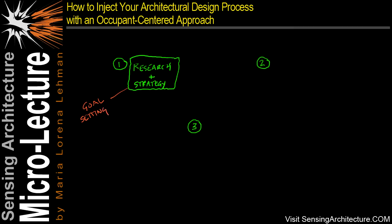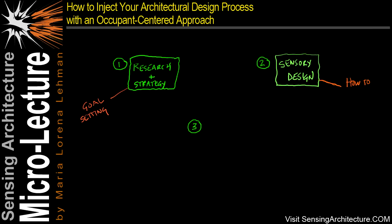In the second step you begin to integrate sensory design. This is where you work to better understand how sensory effects impact your occupants. In this second step you're analyzing how to reach those project goals that you set in the first step.